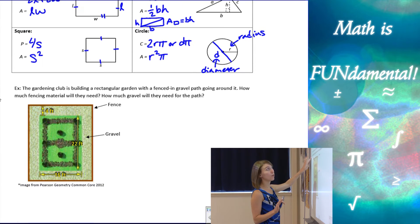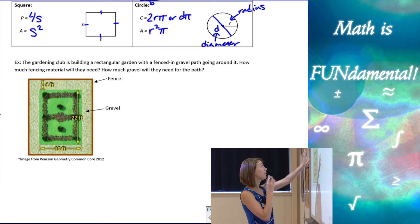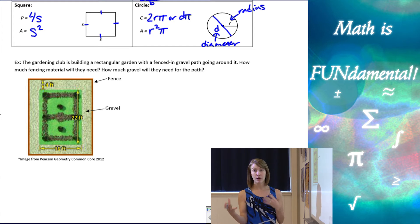So now that we have our formulas, let's look at an example. Here we have a nice little picture of a gardening club. The gardening club is building this rectangular garden, and it has a fenced-in gravel path going all the way around it. I've labeled the fence, the gravel, you can see the garden. They want to know how much fencing material will they need, and how much gravel will they need for the path. So now we have to think, we have a rectangle, but do I do perimeter or area? In this case, we actually need to do both.